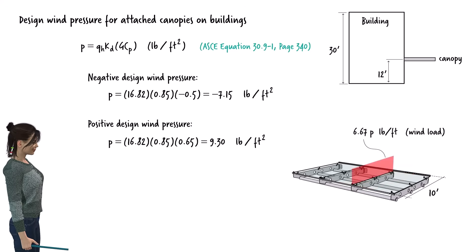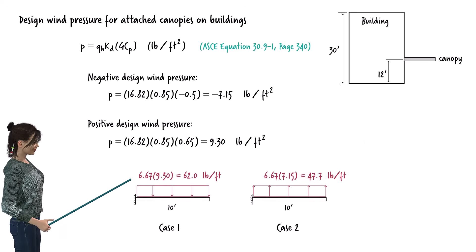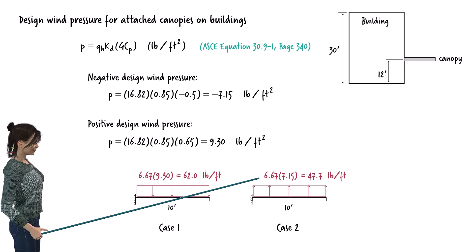Each beam is to be designed for two load cases. A downward distributed load of 62 pounds per foot, and an upward distributed load of 47.7 pounds per foot.